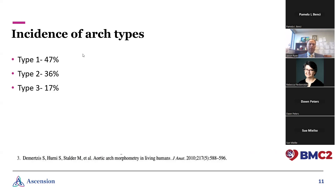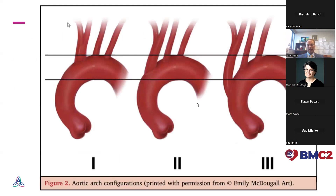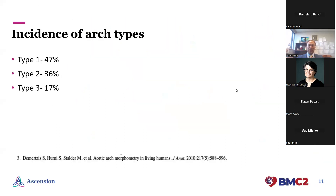The majority end up being type one, the next most common is type two, and third most common is type three with a steep angle. The arch type really only matters if you're going to do interventions via a transfemoral or transradial approach. For a type one arch, coming up from the groin, getting a wire or sheath into the arch vessels is a pretty straight shot. But for a type three arch, you'd need to navigate some pretty significant S curves and bends, making it technically very difficult.